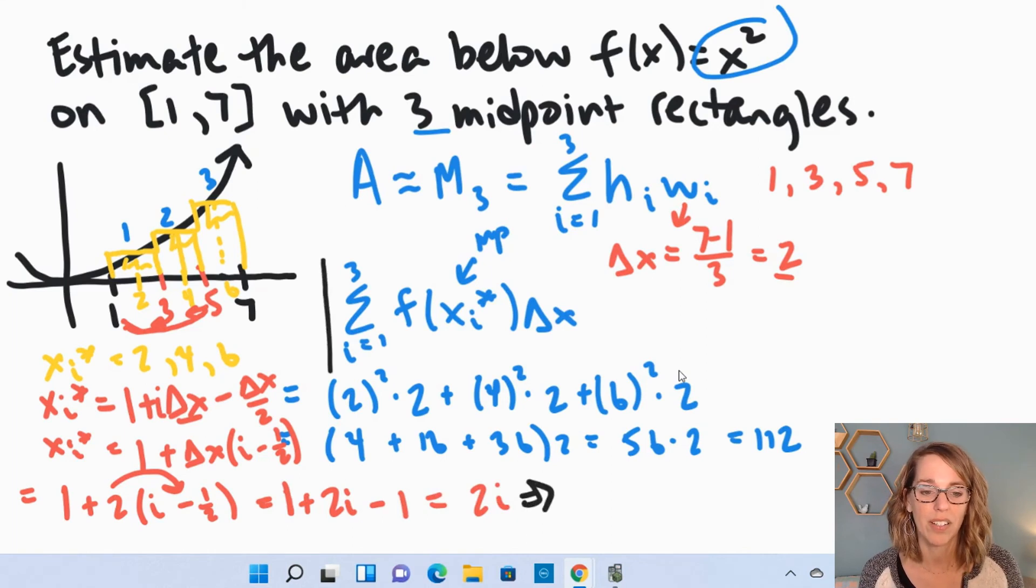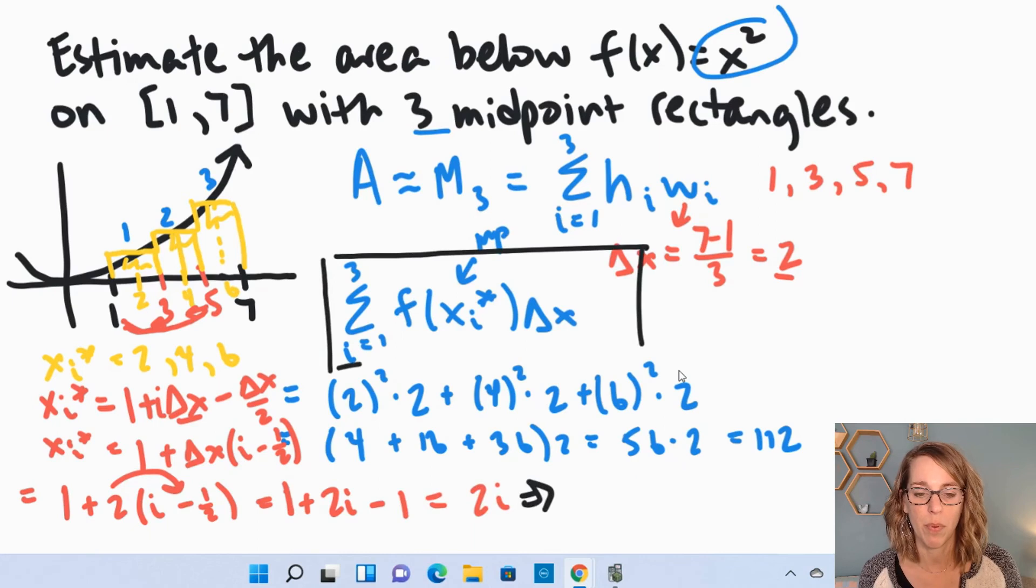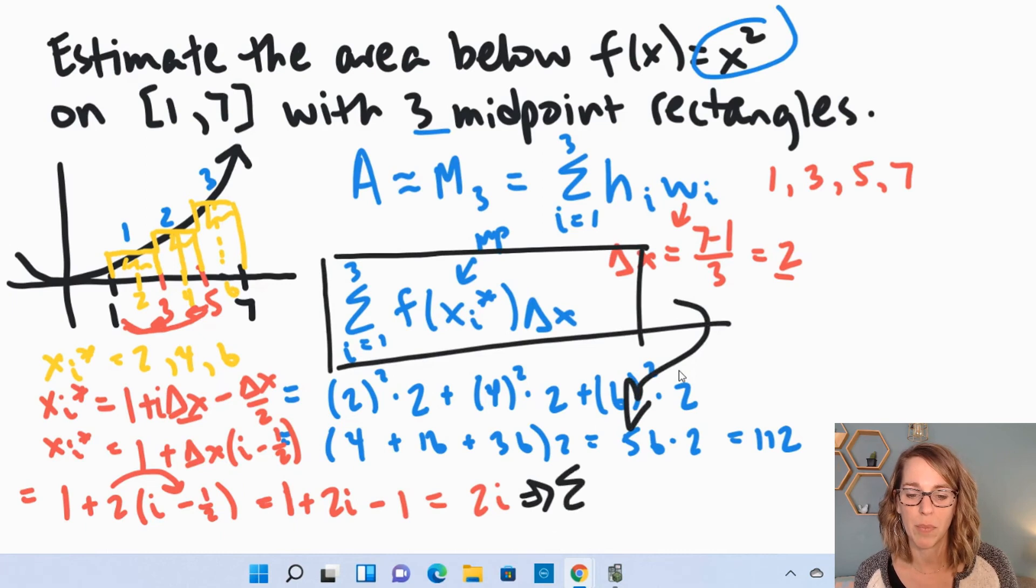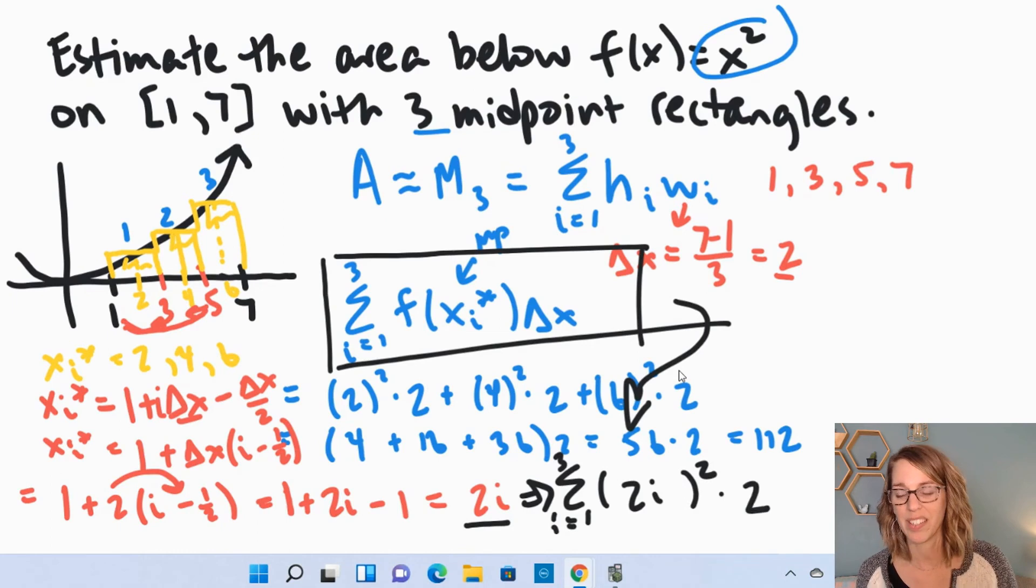I'm going to write in black now what this looks like in our summation. So in our summation, this is going to be i equals 1 to 3. This is going to be my function squared at the sample point. The sample point is 2i, so 2i squared times 2, which is delta x.